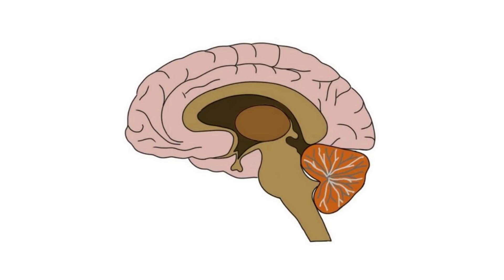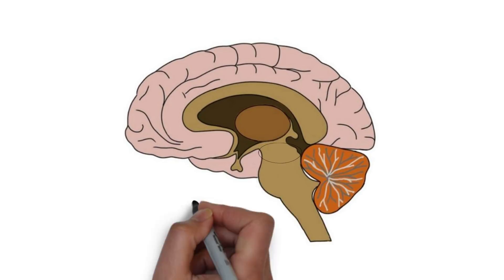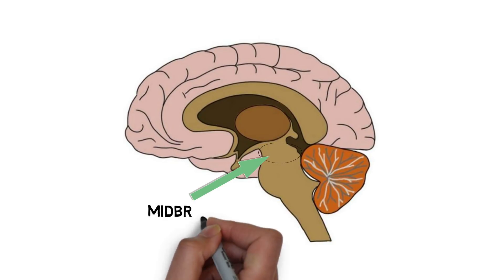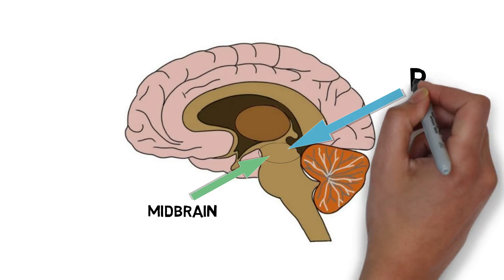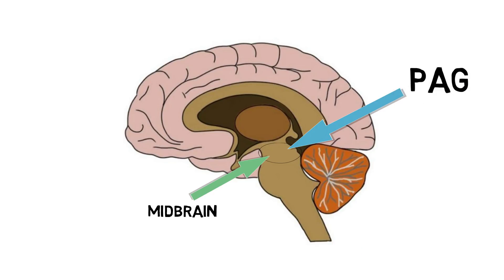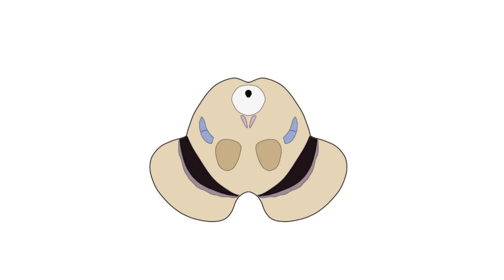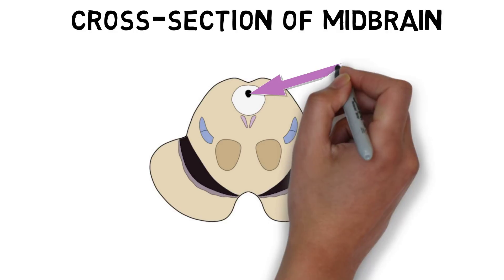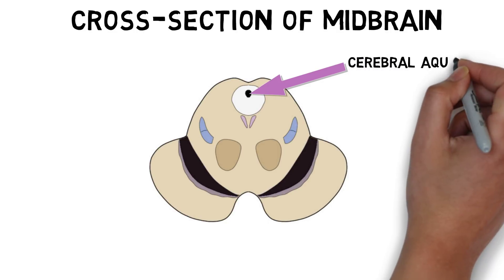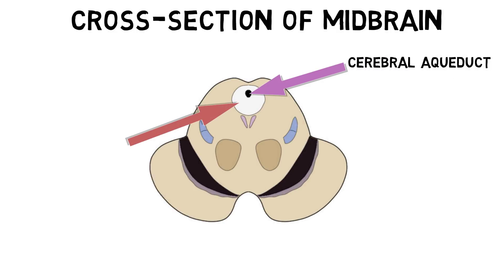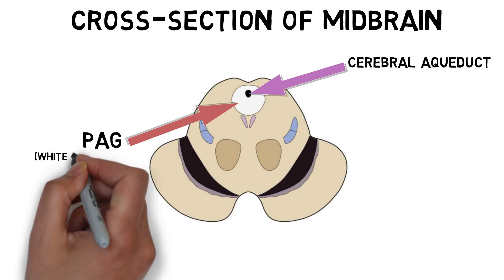The PAG is an area of gray matter found in a part of the brainstem called the midbrain. The PAG surrounds a structure called the cerebral aqueduct, hence the name periaqueductal.